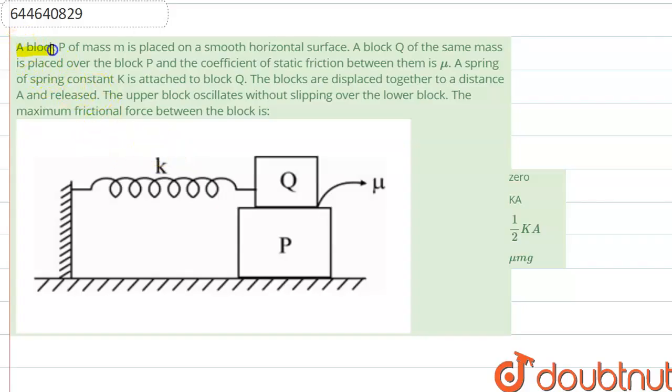are given that there is a block P of mass m placed on a smooth horizontal surface. A block Q of the same mass is placed over block P, and the coefficient of static friction between them is μ. A spring of spring constant k is attached to block Q. The blocks are displaced together to a distance a and released.